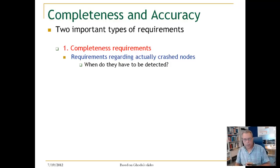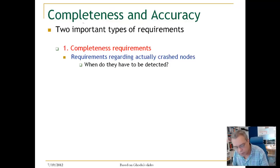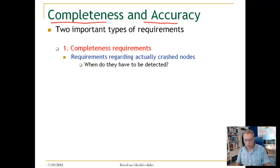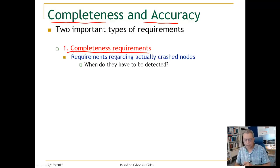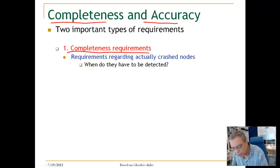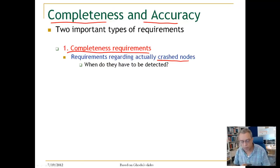A Failure Detector can be captured by two properties: completeness and accuracy. These are two requirements on the Failure Detector, and there are different ways to describe these requirements. What is completeness? Completeness is a requirement regarding actually crashed nodes — when do they have to be detected?